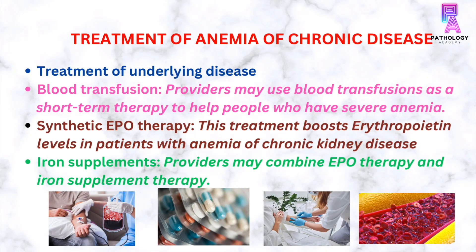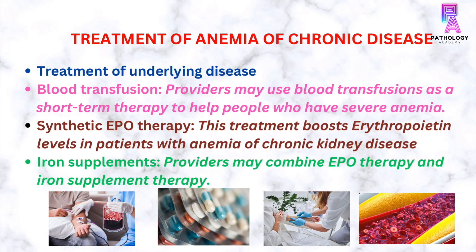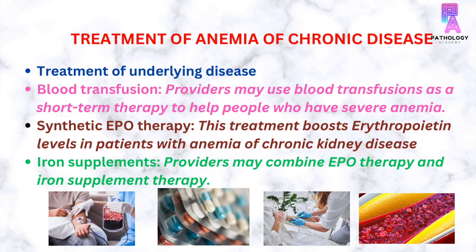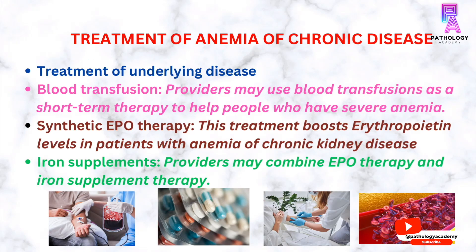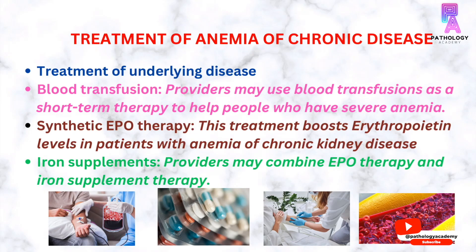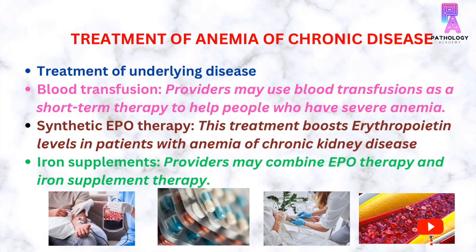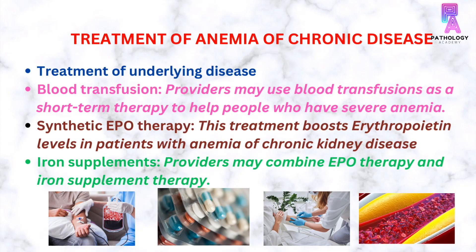The treatment of anemia of chronic disease depends on the underlying disease. In severe anemia, blood transfusions can be given. Erythropoietin can be given to chronic kidney disease patients. Iron supplements can be given to patients who have associated iron deficiency anemia.